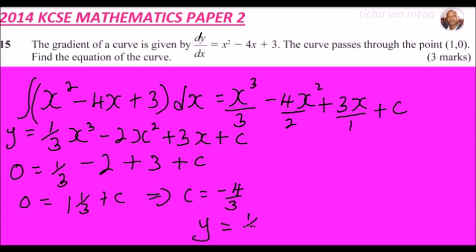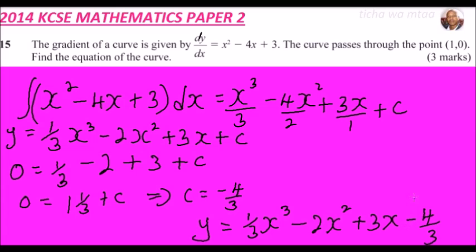So the equation of the curve is y = (1/3)x³ - 2x² + 3x - 4/3. That is the final function and that is how you do this question.